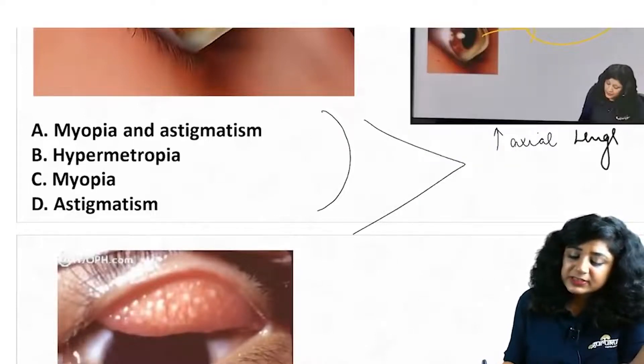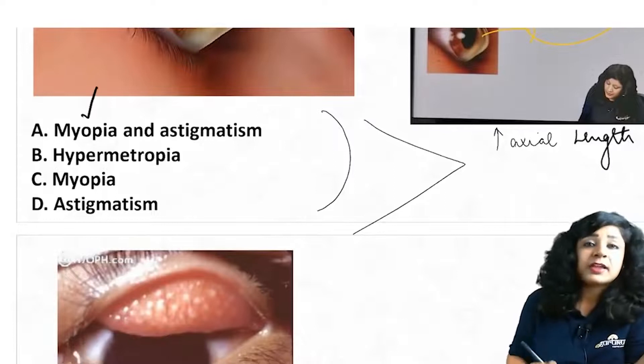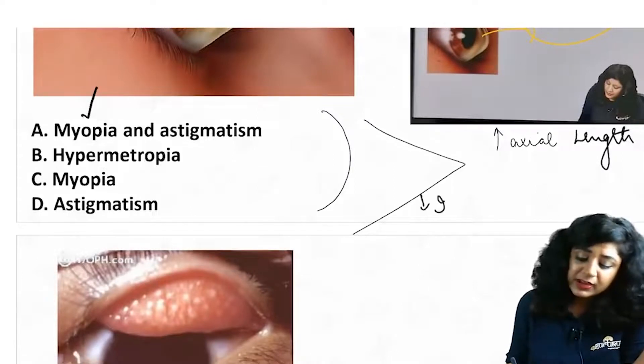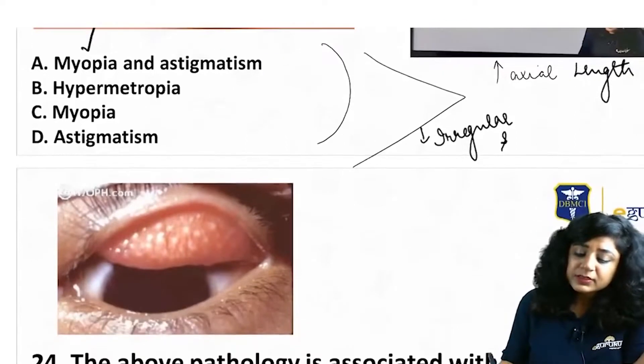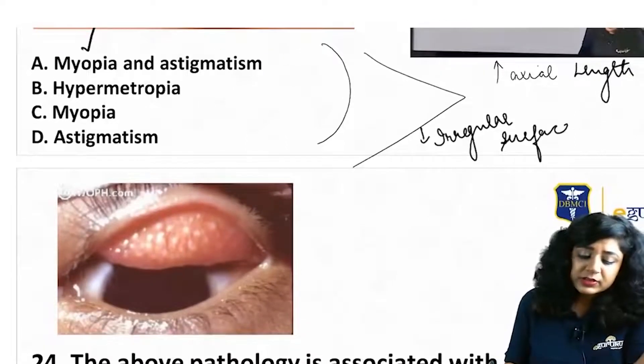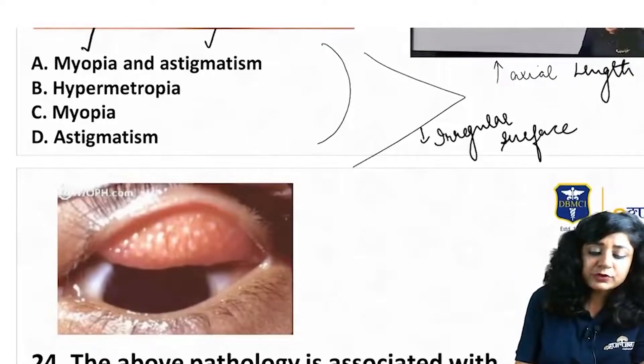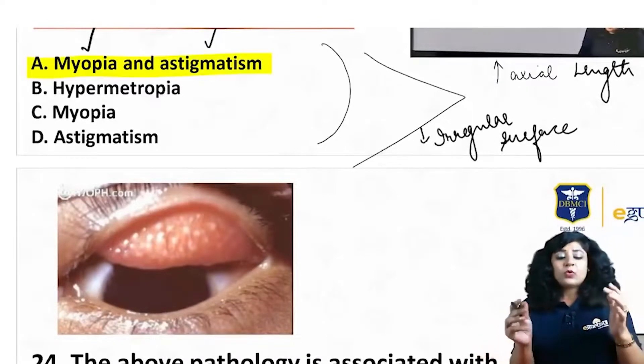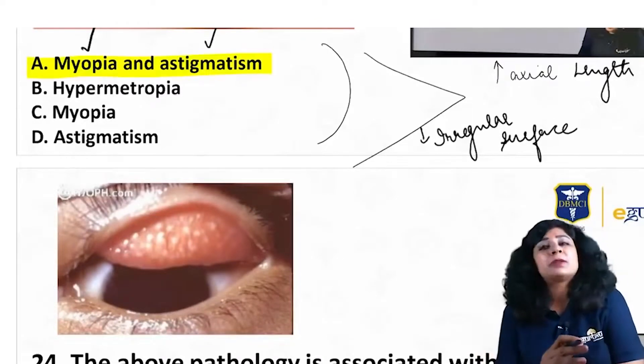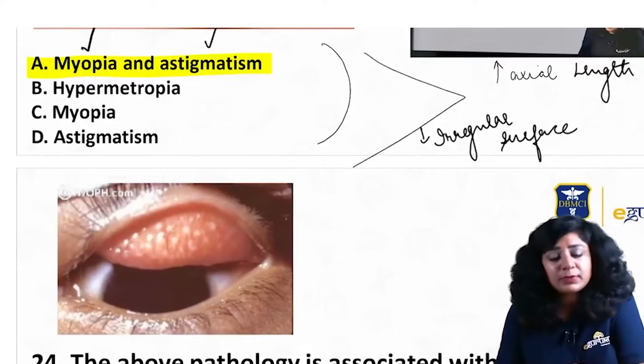Because there is an increase in the axial length, there will be myopia. And there is also an irregular surface, so due to the irregular surface we have astigmatism. Therefore, the answer to this question is myopia and astigmatism. Only astigmatism and only myopia will be incomplete. Hypermetropia cannot be there.